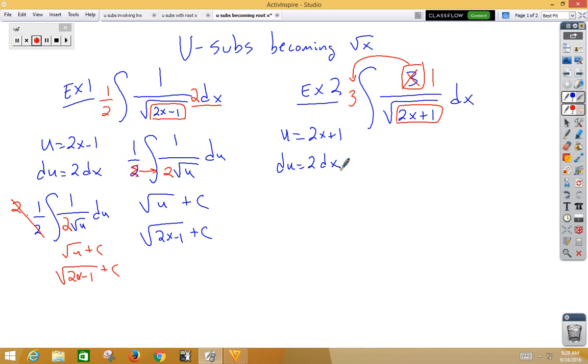Now I don't have a 2dx, so if I multiply by 2, I'm going to have to divide by 2 outside. So notice now I have a 3 halves out front. I have 1 over root u du. Now this is very similar to the last problem. So I can either slide that 2 back in or not. I'm going to go ahead and slide that back in, giving me 3 root u plus c, or 3 root 2x plus 1 plus c.